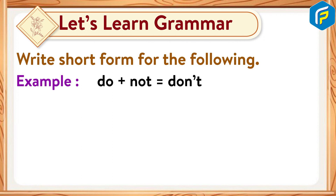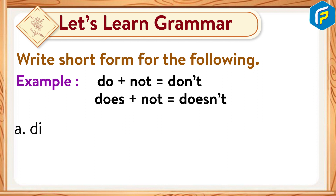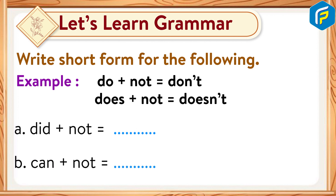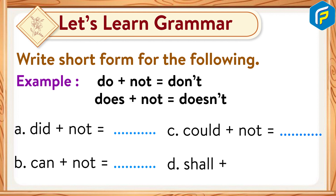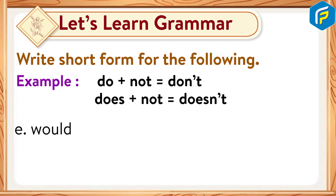Let's learn grammar — write short form for the following. Example: do plus not equals don't. Does plus not equals doesn't. A: did plus not equals didn't. B: can plus not equals can't. C: could plus not equals couldn't. D: shall plus not equals shan't.